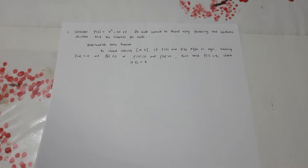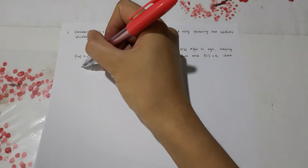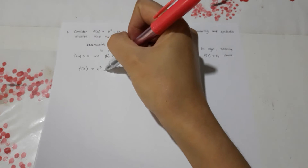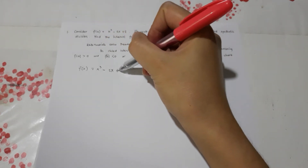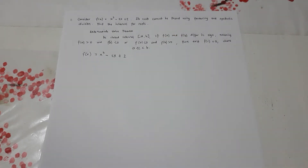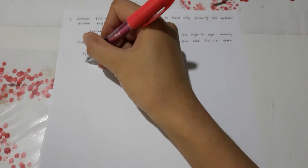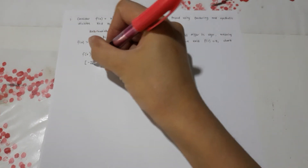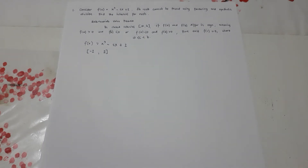To better understand that, we're going to solve question number one. We consider the function f(x) = x³ - 2x + 2. Next, we're going to choose an interval. I'll choose negative 2 to positive 2. It's up to you what interval you choose — I choose negative 2 and positive 2.